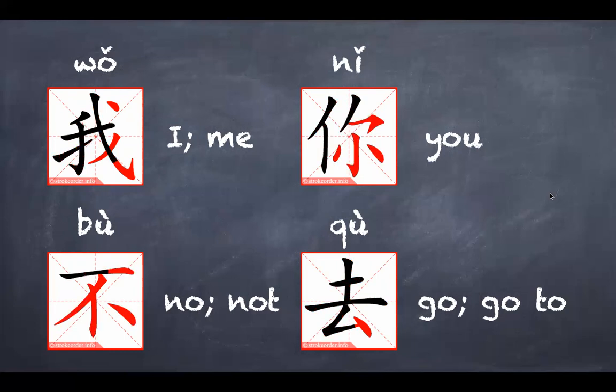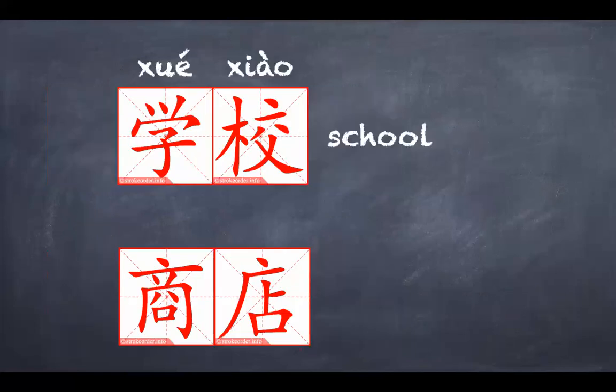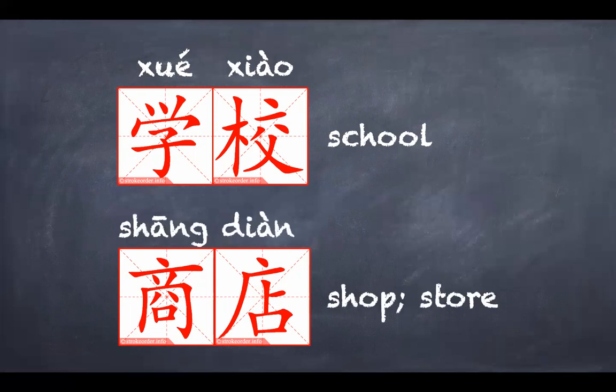Okay, there are some other characters we need to review. First one, 学校, 学校, 学校, 学校, and 商店, 商店. Let's have a look at how they are written.